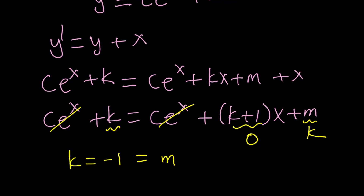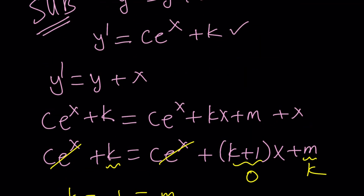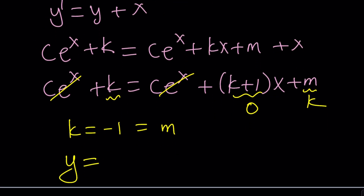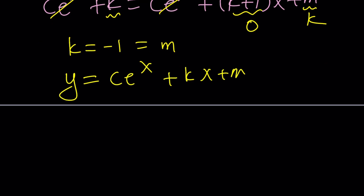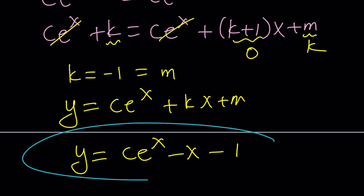Now we can write y with the determined coefficients. y equals c times e to the x plus k x plus m, where k equals negative 1 and m equals negative 1. So y equals c times e to the x minus x minus 1. We still don't know c without initial conditions, but this is exactly the same answer we found with the first method.